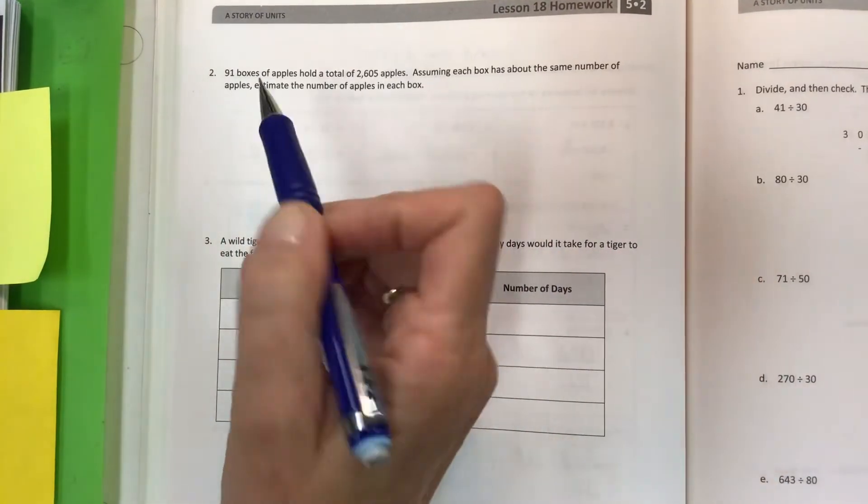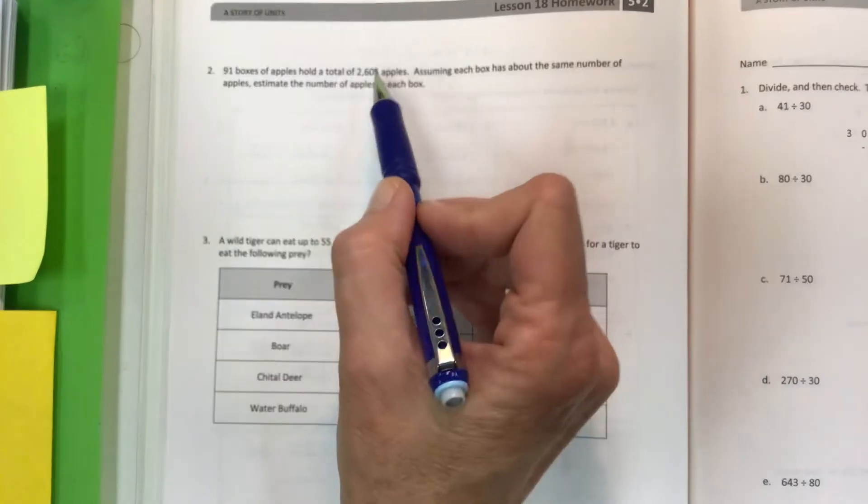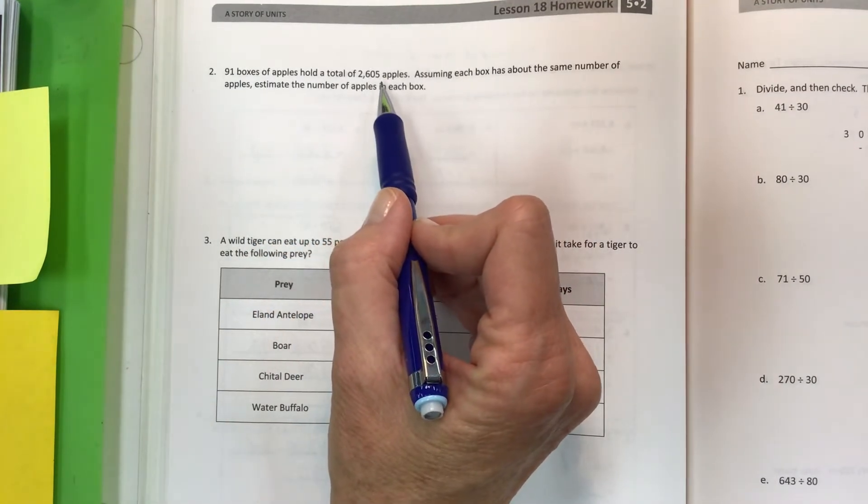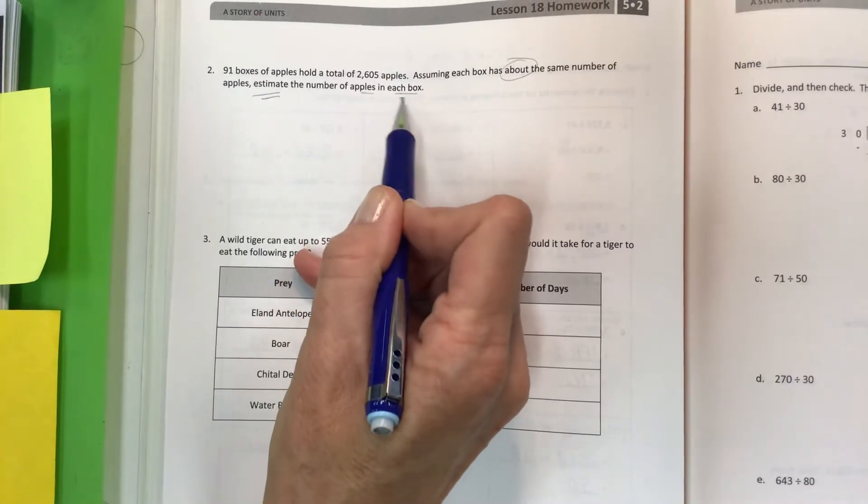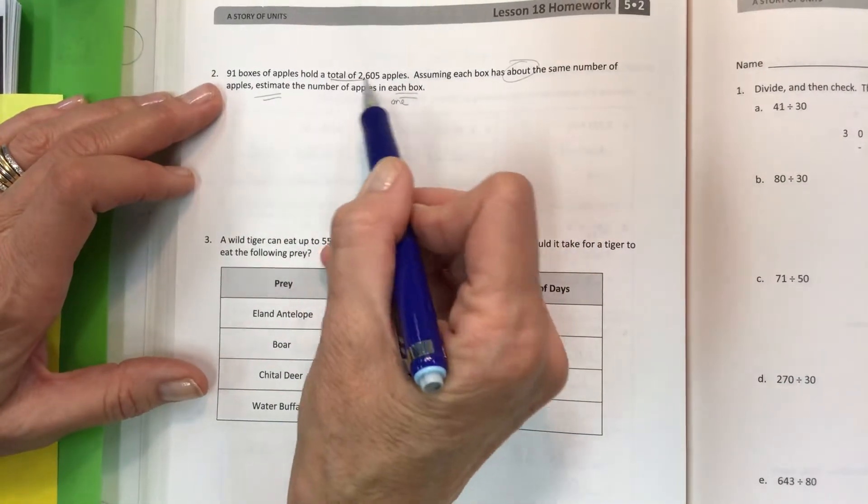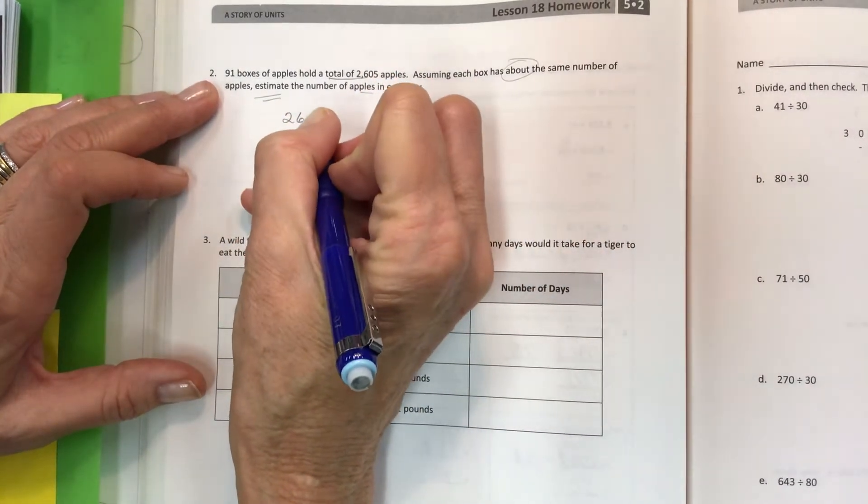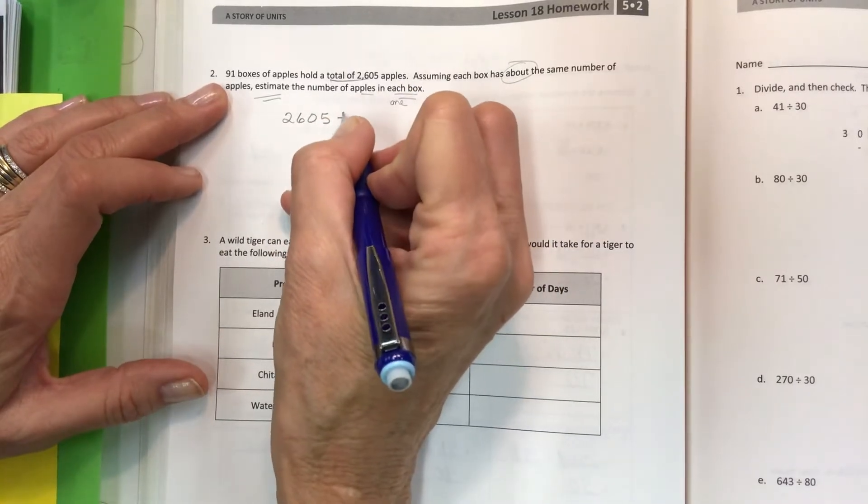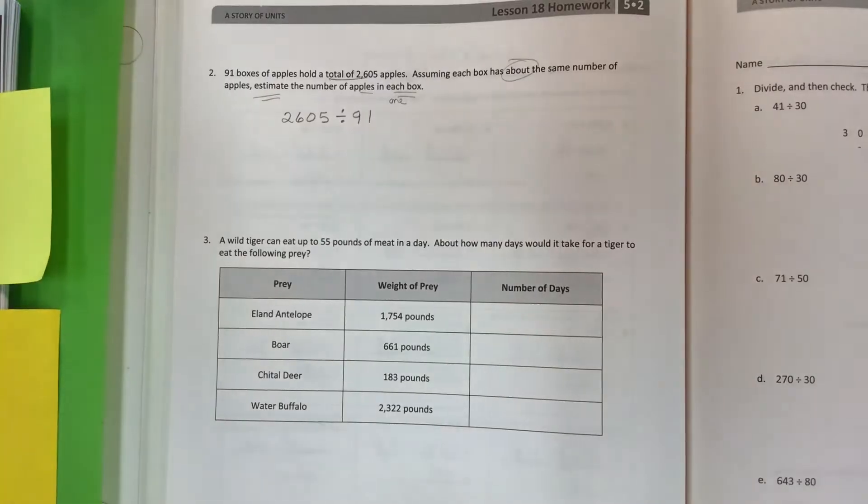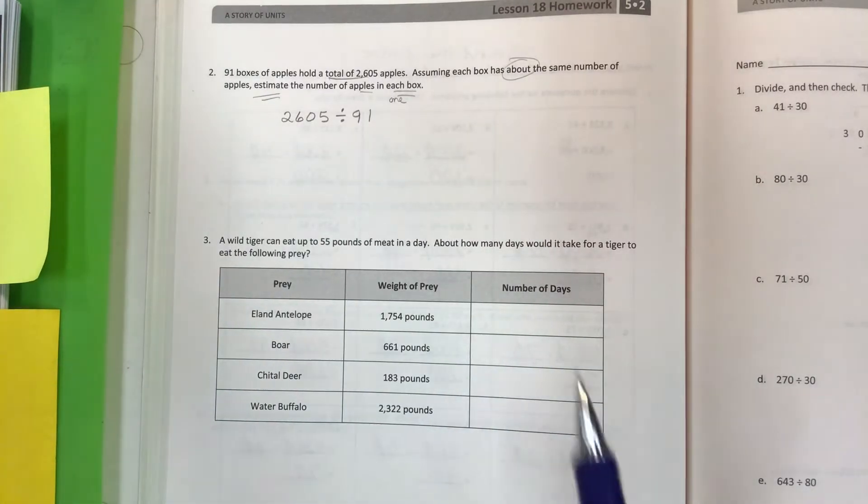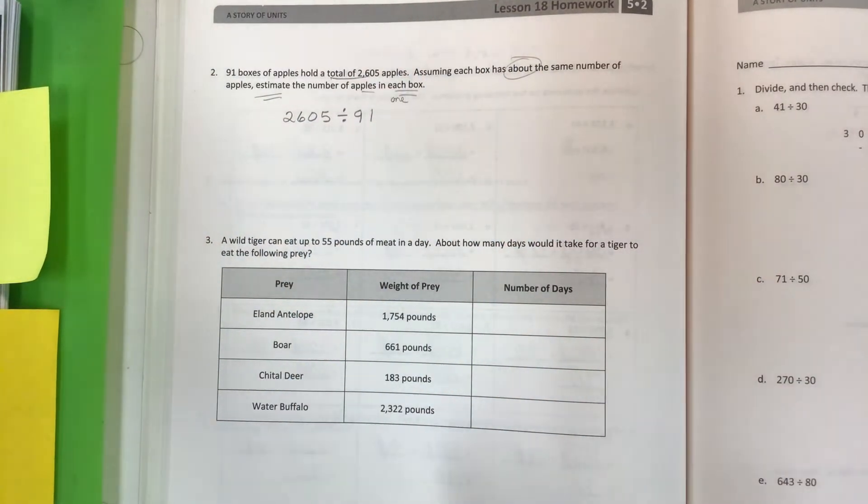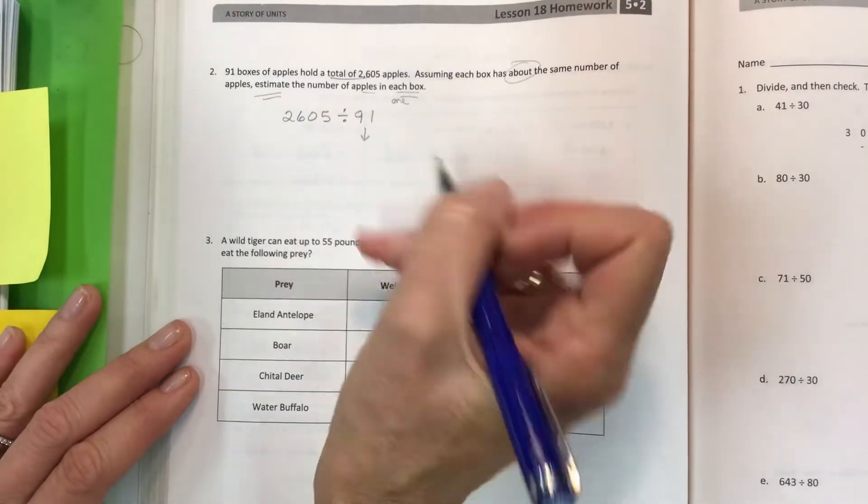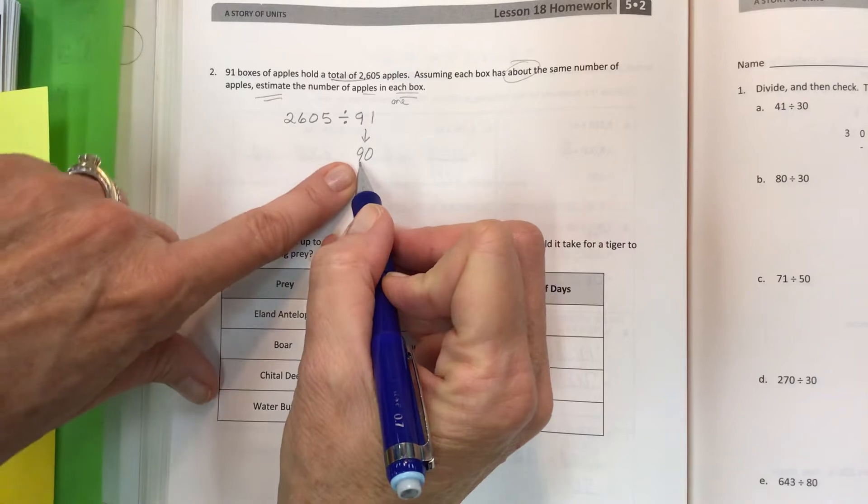Here we have a word problem. 91 boxes of apples hold a total of 2,605 apples. Assuming each box has about the same number of apples, estimate the number of apples in each box. Each is a fancy way of saying one - one box. So if I have the total that's given to me, 2,605 apples, and it's 91 boxes, then now we have set up our problem because we're trying to find one box. We have all this other information but we only need to estimate using the strategy we know.